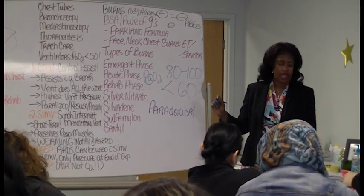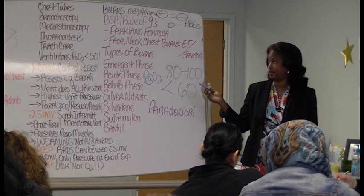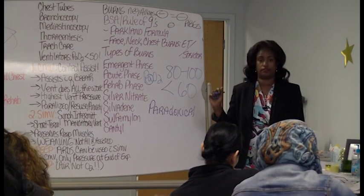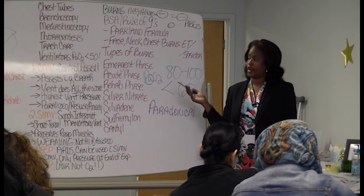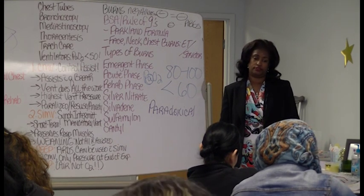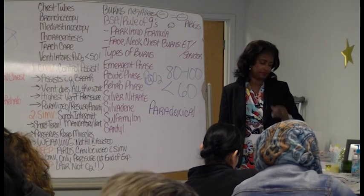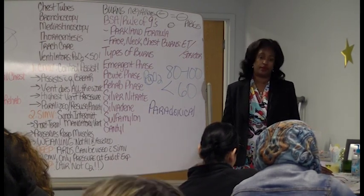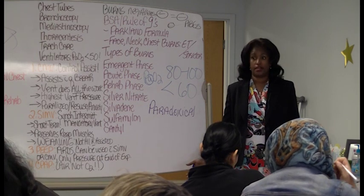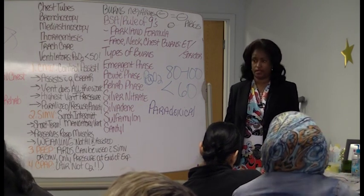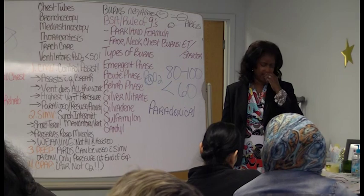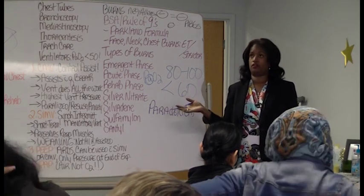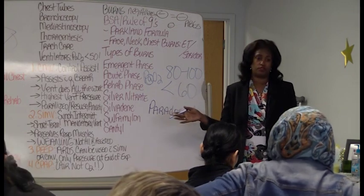Add that language next to pneumothorax: flail chest. Flail chest means somebody's ribs are broken — a fractured rib. So anybody with a rib fracture could have a pneumo because it happened in the thoracic cavity. They might sneak it in on you and say flail chest, and this is everything to do with pneumo.